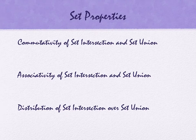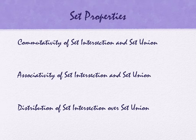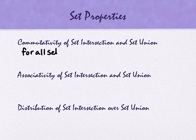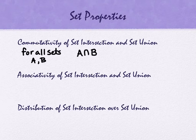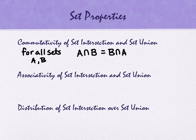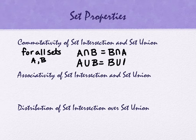Some set properties. The first set property we're going to talk about is commutativity. The second one is associativity. And the third one is distribution. So set commutativity says the following. For all sets A and B, A intersect B is the same as B intersect A. That makes sense.